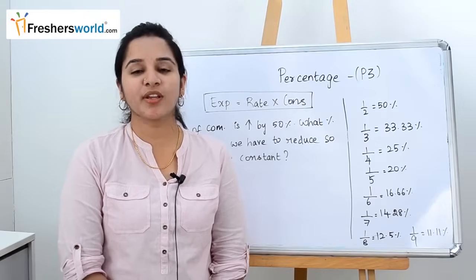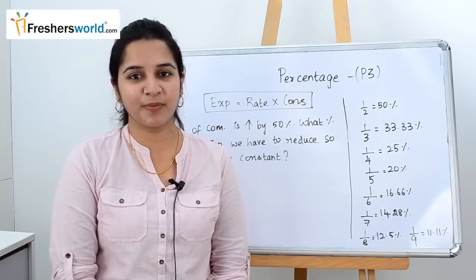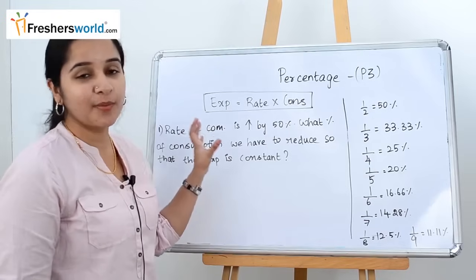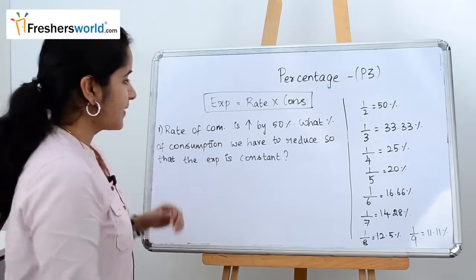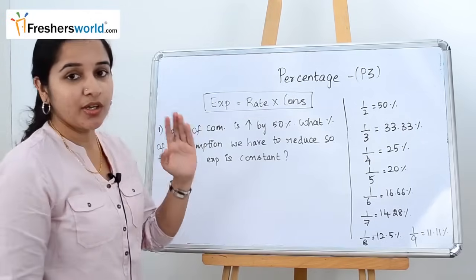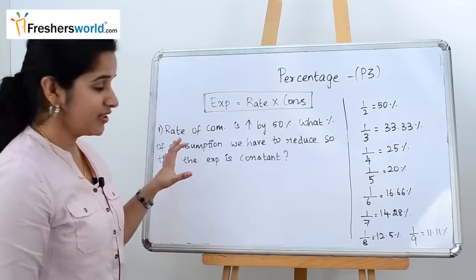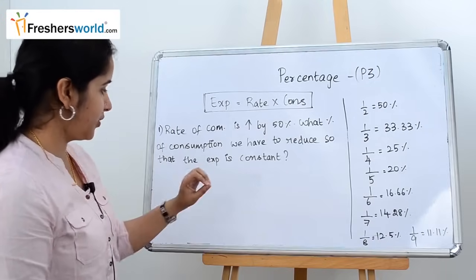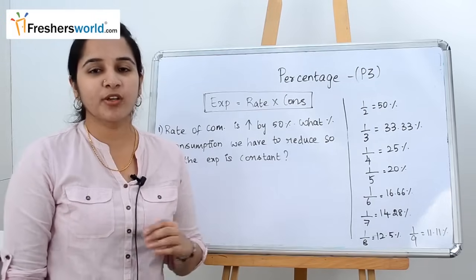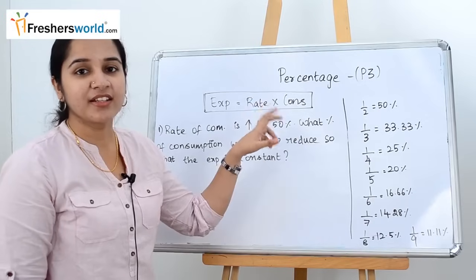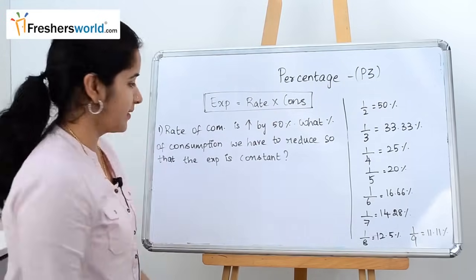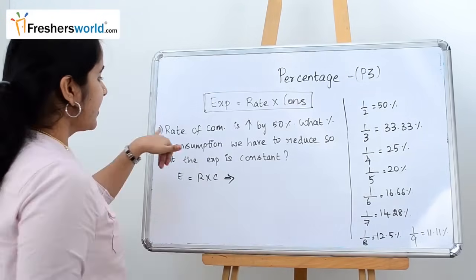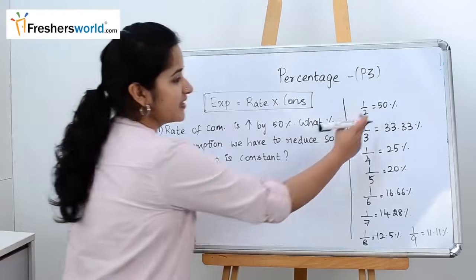In this video we will deal with various other percentage concepts useful for your aptitude exam. The first concept involves expenditure, rate, and consumption. The basic formula is: expenditure = rate × consumption. The question is: the rate of a commodity is increased by 50% — what percentage of consumption must be reduced so that expenditure remains constant? 50% = 1/2.